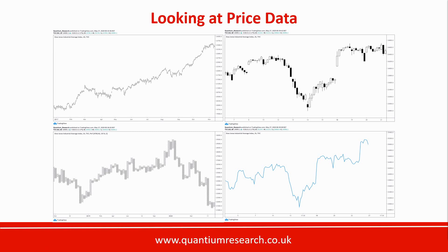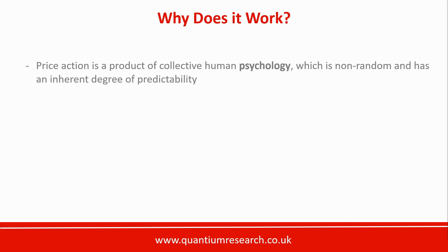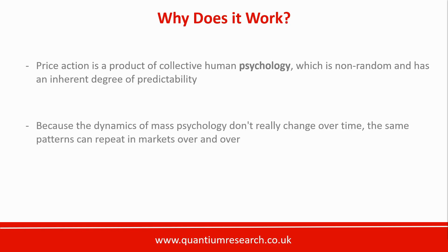You don't really need to know everything about technical analysis to be successful, but most analysts concentrate on just a few methods which they find work particularly well for them, and usually they have a preferred chart type. We must ask ourselves, though, how does technical analysis work? How can you predict price movements just by looking at price without knowing anything about the business or asset you're analysing? It's important to understand that when you're looking at a chart of price action, you're looking at the product of collective human psychology, which is non-random and has an inherent degree of predictability. And because we are dealing with human emotion and mass psychology, which works in the same way over time, the same patterns can repeat in markets over and over again.